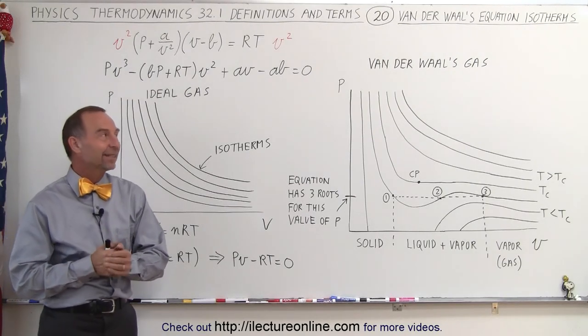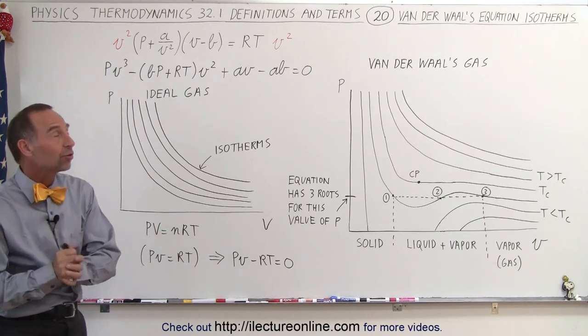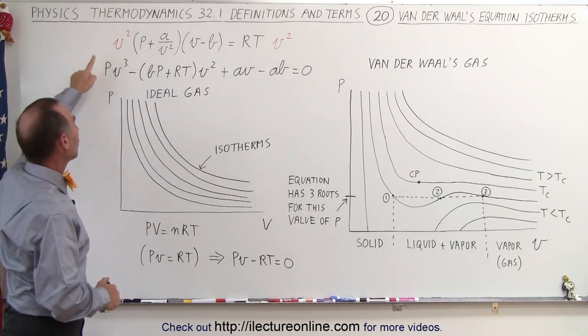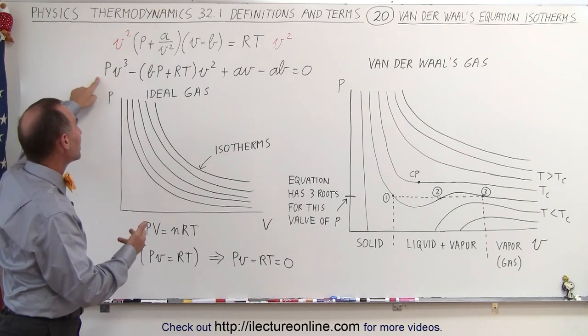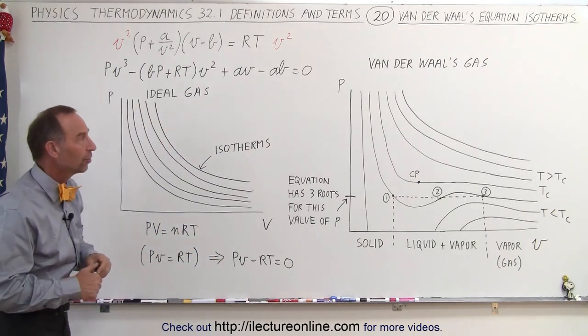Welcome to iLecture Online. Now let's take a look at the graphical representation of the Van der Waals equation after we've multiplied both sides of the equation by v squared and writing it in terms of v. So we have v cubed, v squared, v to the first power and a constant term all set equal to zero.